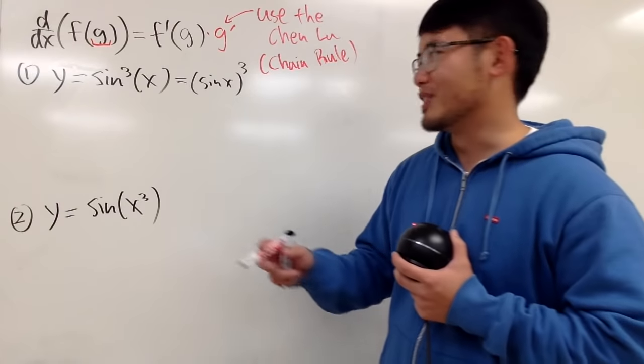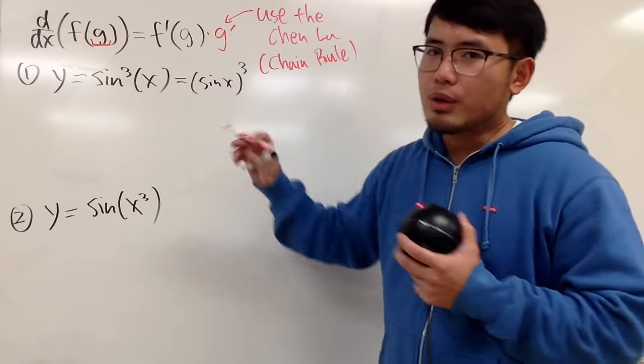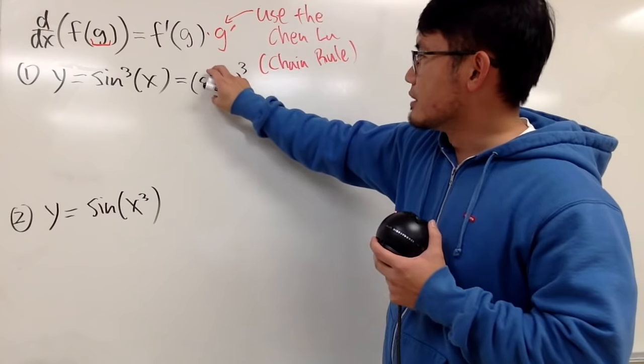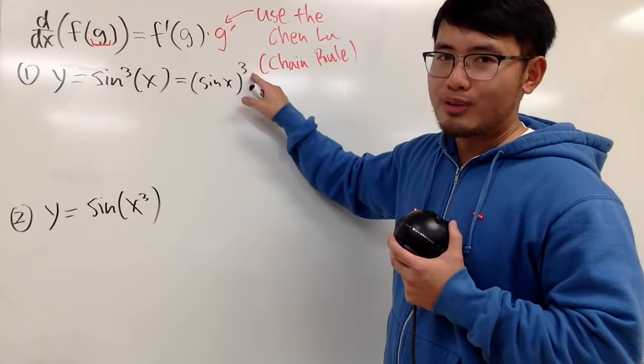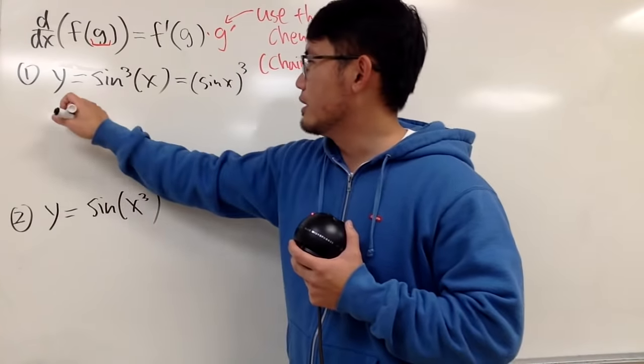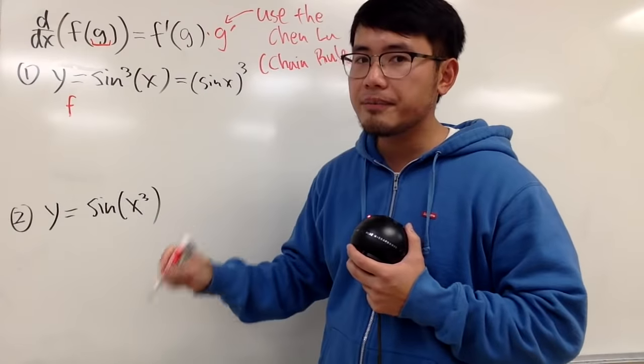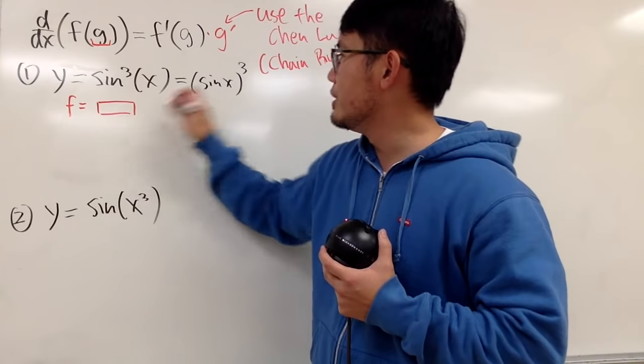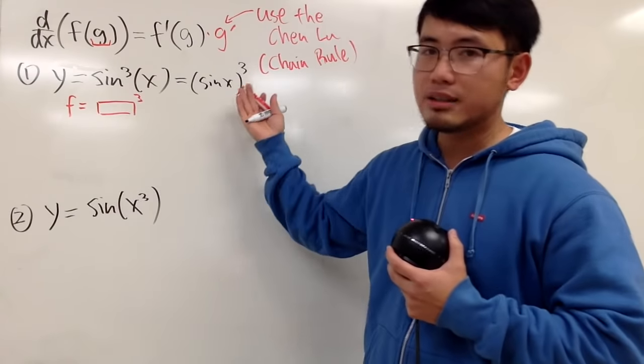First of all, you have to look at the big picture. We have something inside and the rest to the third power, right? So the outer function, which is labeled here as f, I will just put this as a box to the third power like this, right?